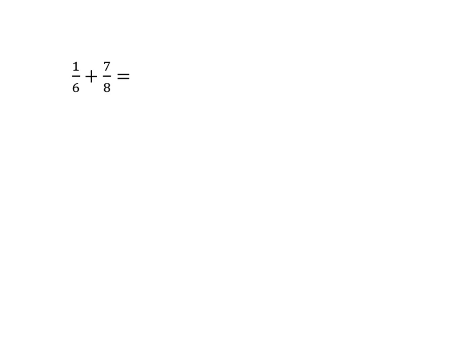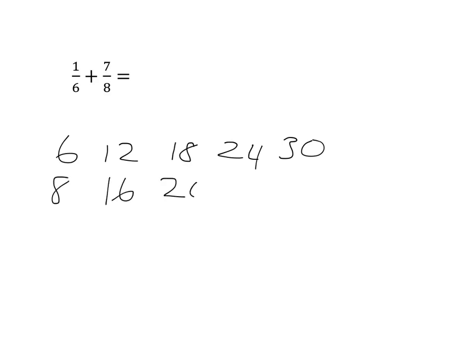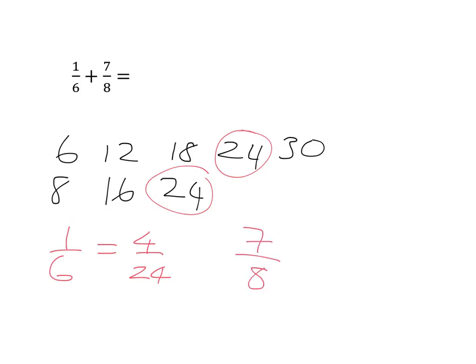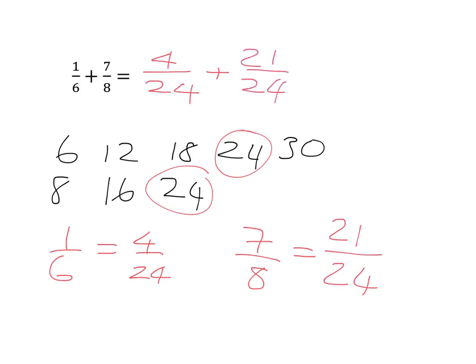Quickly try this one in your homework books: 1 sixth plus 7 eighths. Pause the video now. You should find the multiples of 6: 6, 12, 18, 24... and multiples of 8: 8, 16, 24. The common denominator is 24. 1 sixth becomes 4 over 24, and 7 eighths becomes 21 over 24. So 4 over 24 plus 21 over 24 gives an answer of 25 over 24.